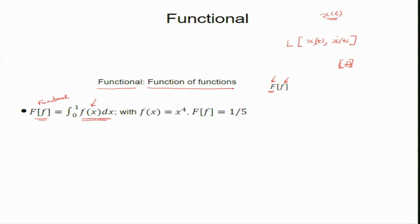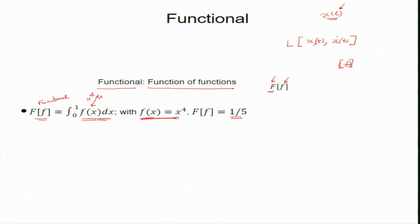For ordinary functions we insert a value of time, but for a functional you insert the full function and get a number. For example, if I put f(x) = x⁴, then the integral gives x⁵/5 evaluated from 0 to 1, which equals 1/5. So I get a number, but its value depends on the function I insert.